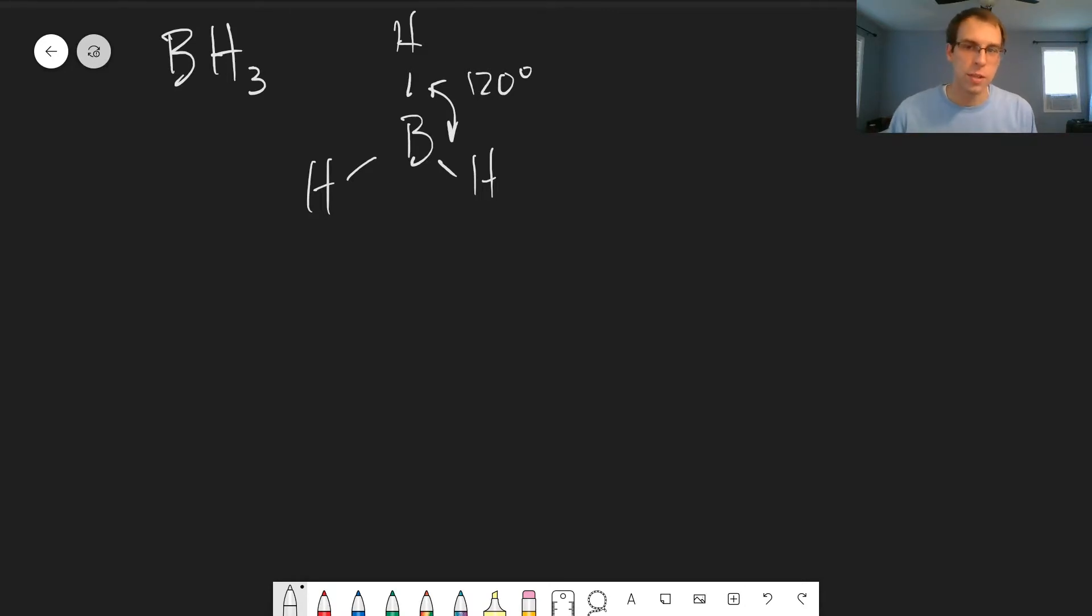And again, if we look at just the p orbitals and s orbitals on the boron, there's no way to create this geometry. P orbitals are all 90 degrees away from each other.